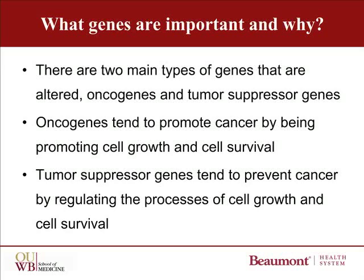Oncogenes are often changed to produce more protein, called overexpression, or altered to change the protein structure such that it does not recognize other proteins which normally control its function. Or sometimes the gene is relocated next to another very strongly expressed normal gene that increases the oncogene's activity. Tumor suppressor genes, on the other hand, are often deleted or have mutations that cause the protein not to work, or other mechanisms which prevent the production of a functional protein.